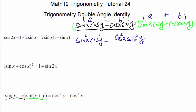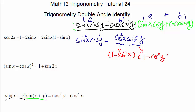We have four different terms here and can't simplify directly. So we convert: replace cosine²x with (1 - sine²x), and replace sine²y with (1 - cosine²y). This reduces our four different species to two.